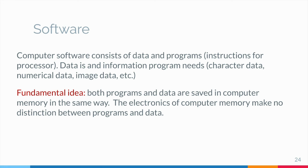The fundamental idea is that both programs and data are saved in computer memory in the same way. The electronics of computer memory — both main memory and secondary memory — make no distinction between programs and data. The insight that both programs and data can be saved using the same electronic methods is an important concept in computer science. Computer systems use memory for either programs or data as needed.